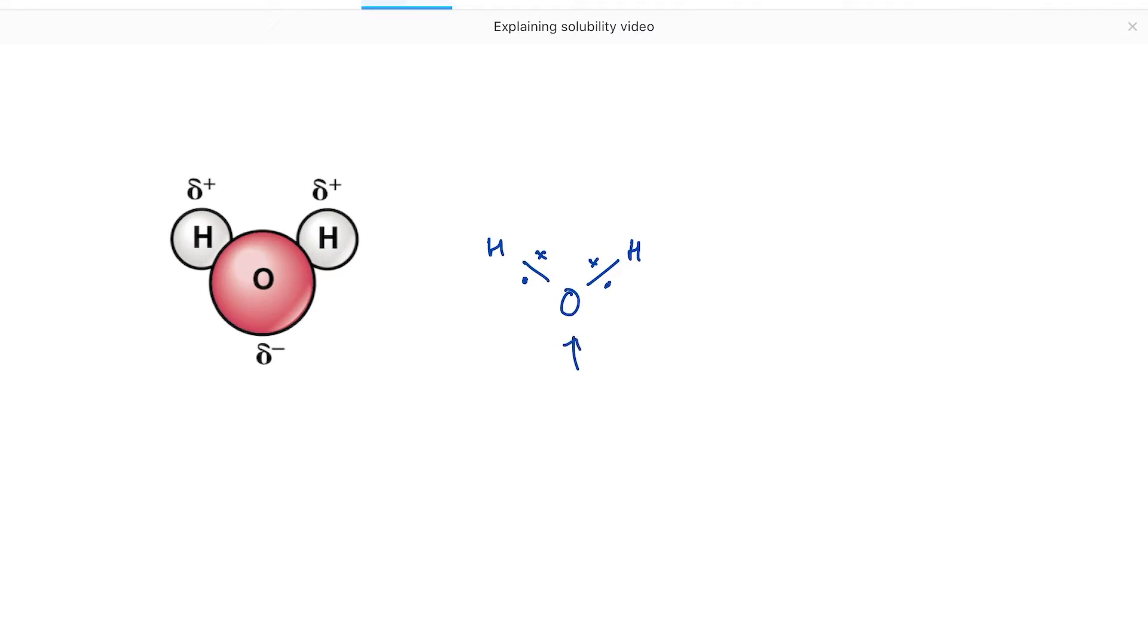However, oxygen has eight protons in its nucleus, hydrogen only has one, which means that oxygen exerts a greater pull over those electrons. It attracts them more strongly towards itself than compared with the hydrogen atoms. We say that oxygen is electronegative—it has an ability to pull shared pairs of electrons towards itself.